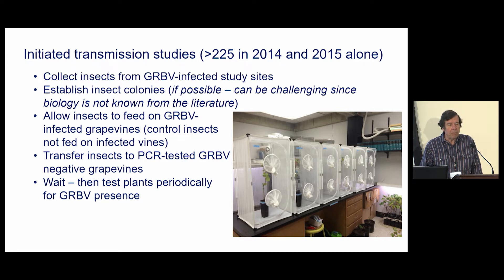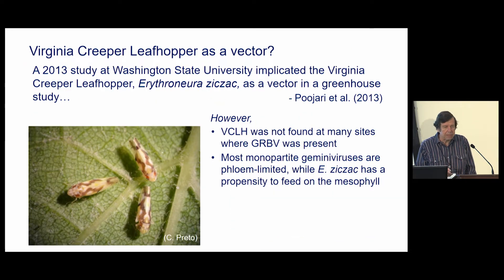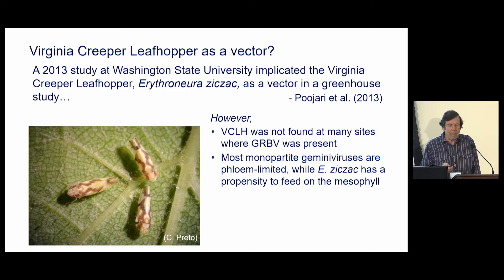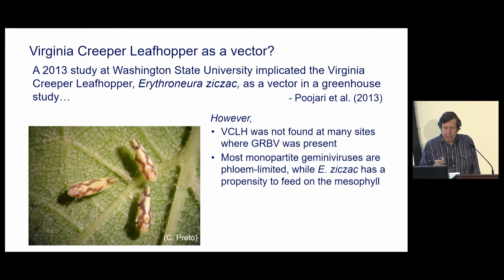We would test those plants periodically for the presence of the virus. One paper came out of Washington State University that indicated that Erythroneura ziczac, the Virginia creeper leafhopper, might be a vector of red blotch. But we noted that we didn't find Virginia creeper leafhopper at a lot of the sites where red blotch virus was present. We were also concerned because most Gemini viruses are phloem-limited and Virginia creeper leafhopper feeds on the mesophyll, so it was unlikely it would be a vector.